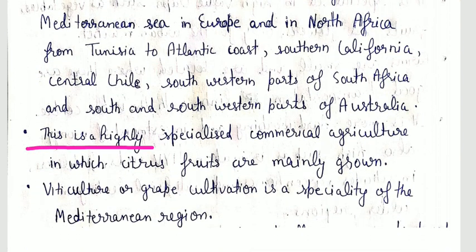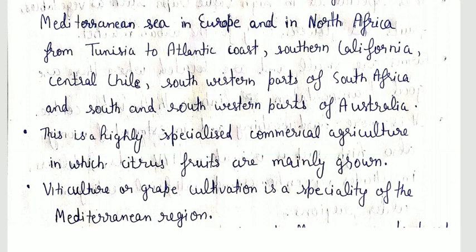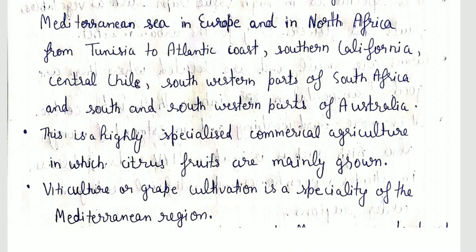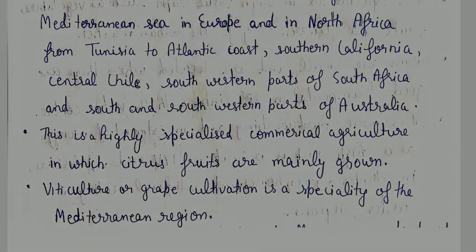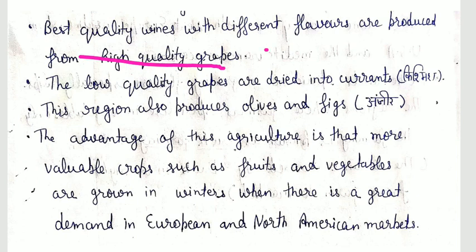This is a highly specialized commercial agriculture in which citrus fruits are mainly grown. Viticulture and grape cultivation is a speciality of the Mediterranean region. Best quality wines with different flavors are produced from high quality grapes.